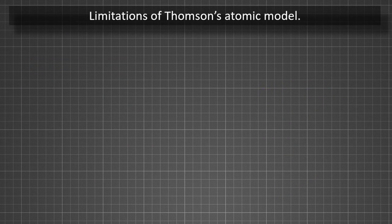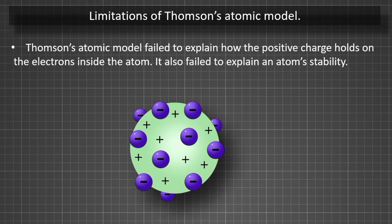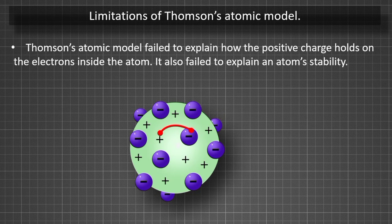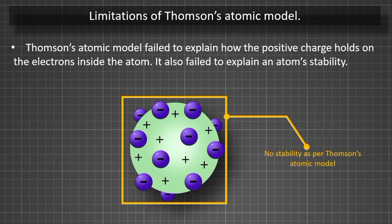Limitations of Thompson's Atomic Model. Thompson's Atomic Model failed to explain how the positive charge holds on the electrons inside the atom. It also failed to explain an atom's stability.